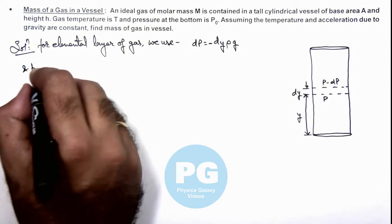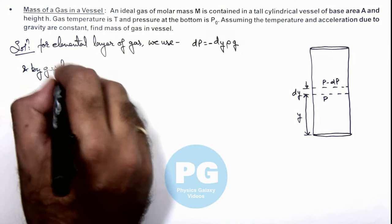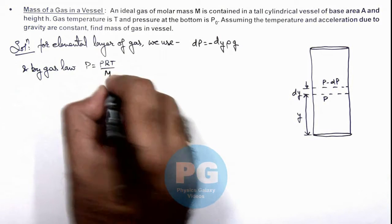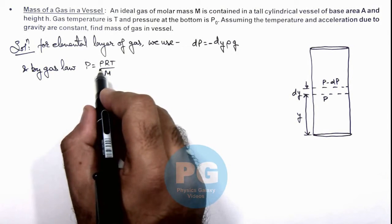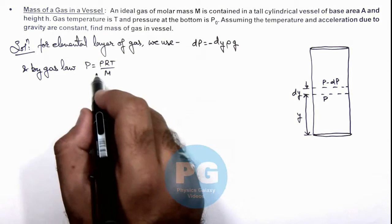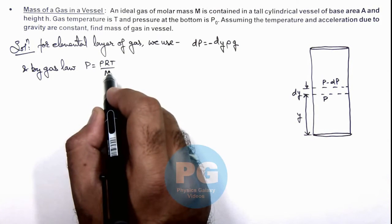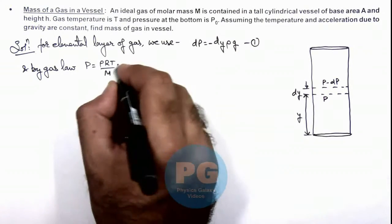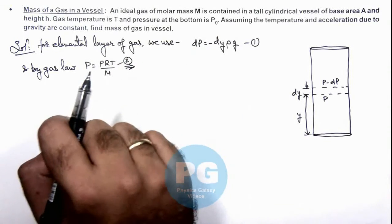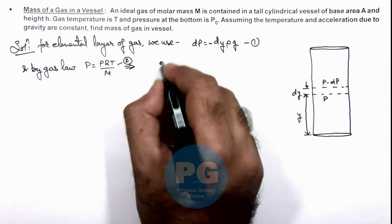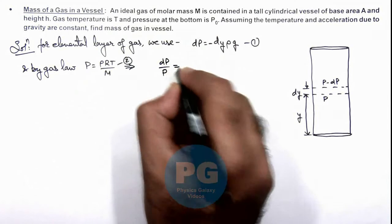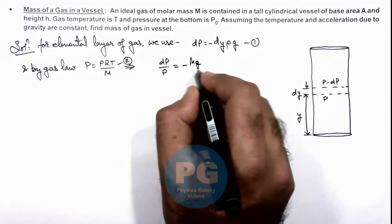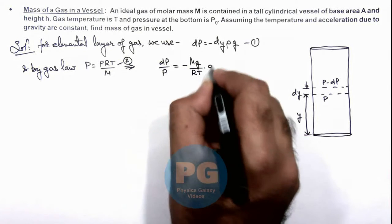And by gas law we can write P = ρRT/M. And here if we substitute the value of dP on differentiating this value, then we can see dividing this will give us - say if this is equation 1 and this is equation 2 - then on dividing the two values we can see this gives us dP/P = -Mg/(RT) multiplied by dy.